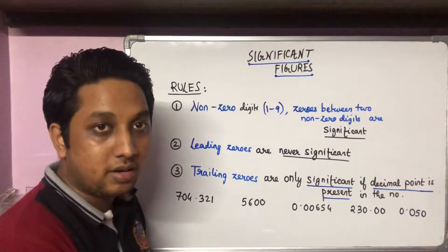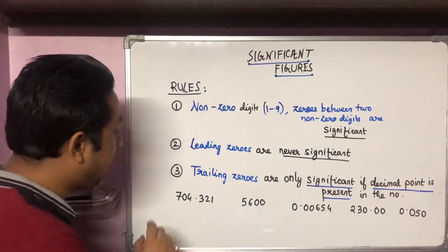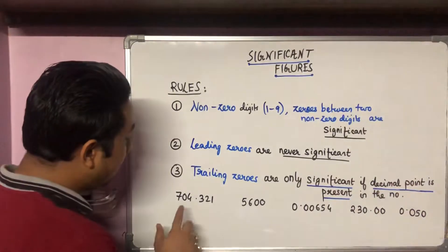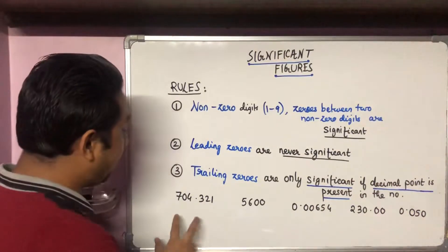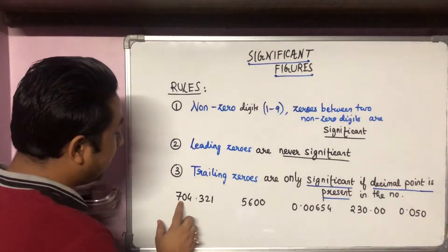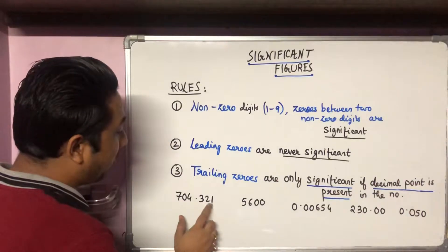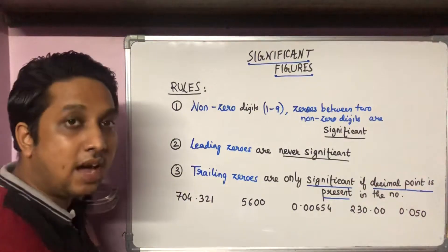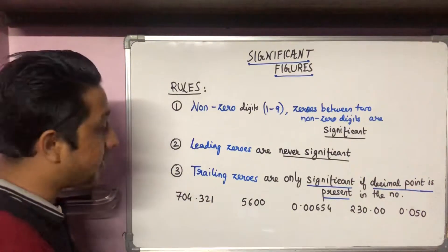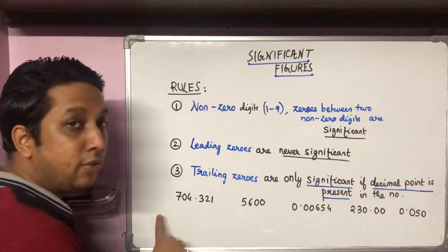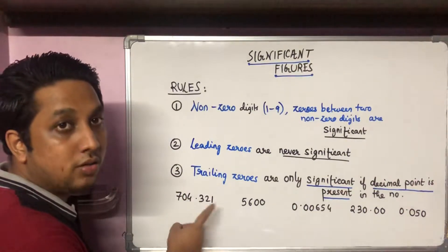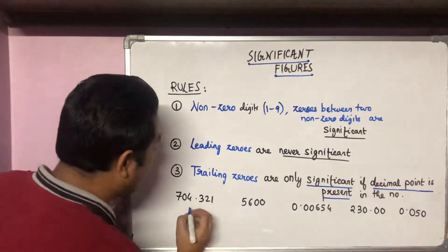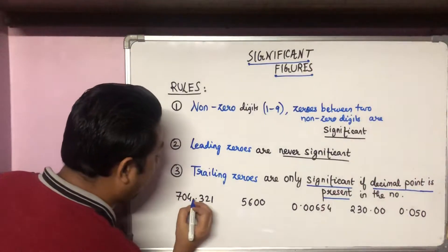For example, 704.321 — here we have one, two, three, four, five, six significant figures, giving us six significant figures. This is because the nonzero digits are significant, and the zero is lying between two nonzero digits, so it is also regarded as significant.